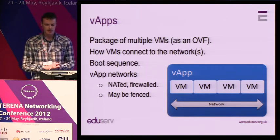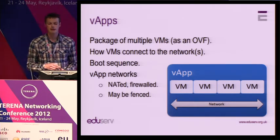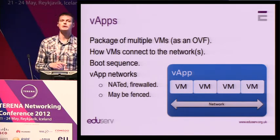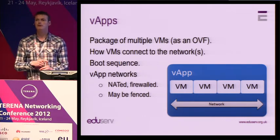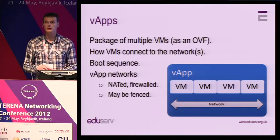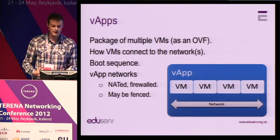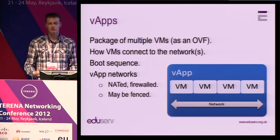A VApp is effectively a package of multiple virtual machines, expressed as an OVF template. It contains quite a lot of additional metadata — including how and which networks those VMs connect to, a boot sequence if you need some VMs to boot before others, and networking information. Within a VApp you can NAT, firewall, port forward, and configure all of this. The really powerful thing within vCloud is that because all of this is doable via an API, you can effectively programmatically compose VApps from their individual parts or build them from pre-built templates. And because the VApp itself can have its own network, you can fence off that network and effectively pick up a whole micro-bit of infrastructure in the form of a VApp and drop it into a different cloud.